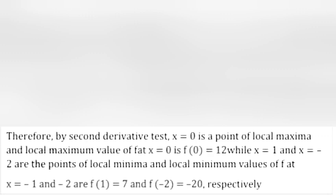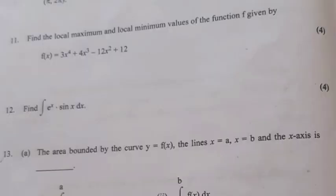Local maximum value of f at x = 0 is f(0) = 12. While x = 1 and x = -2 are points of local minima, and local minimum values are f(1) = 7 and f(-2) = -20 respectively.